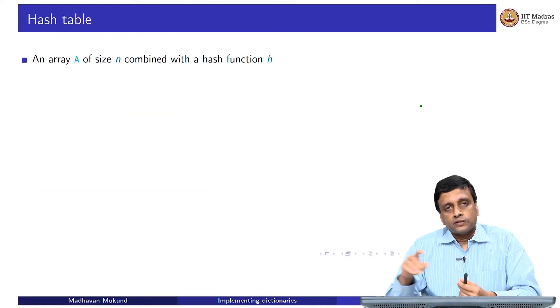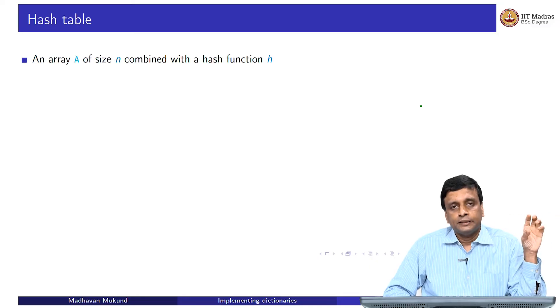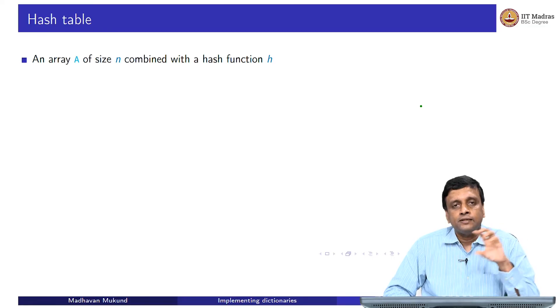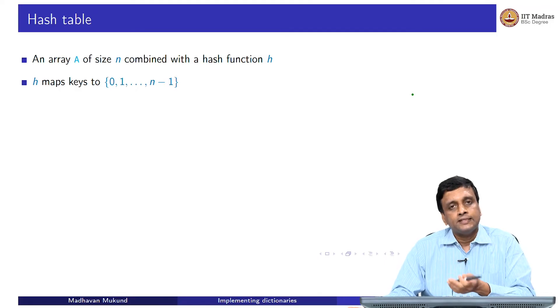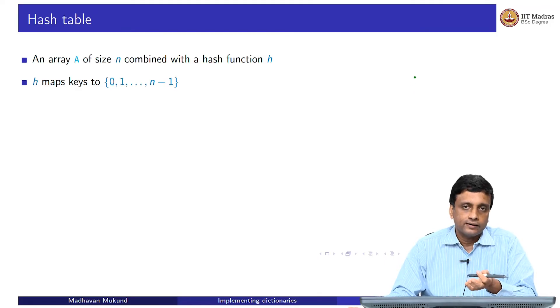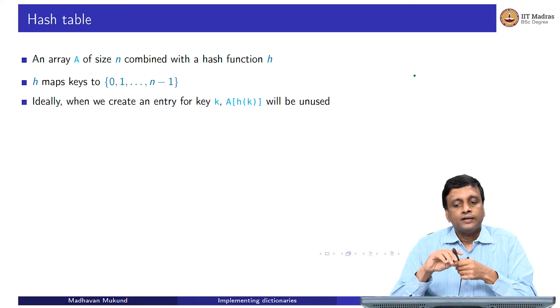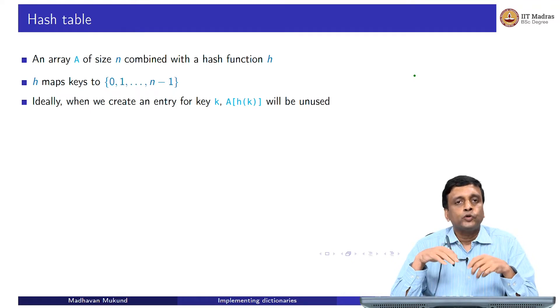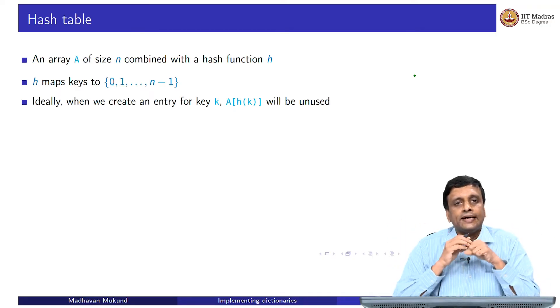The way we use this hash function is we want to take the key and map it to a position in an array. This is called a hash table. A hash table is an array of size n, combined with a hash function, which maps keys to this range 0 to n-1. The idea is that h will map the keys that you provide whatever keys they are. The keys are not restricted. Only the range of the hash function is restricted, it depends on what the keys are.